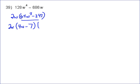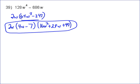These follow the same pattern as the sum of two cubes: square the first to get 16W², multiply them together to get 28W, and square the last to get plus 49. That is the difference of two cubes fully factored. You can't factor inside that trinomial, so you are done: 2W times (4W − 7) times (16W² + 28W + 49).